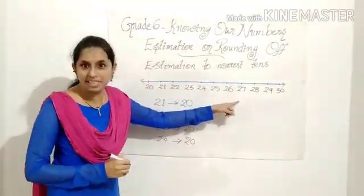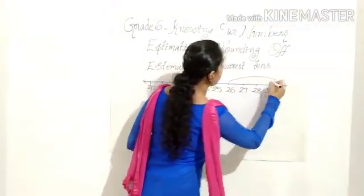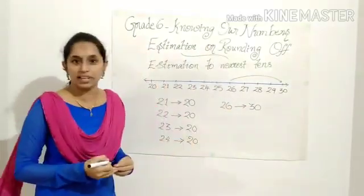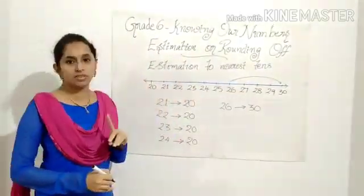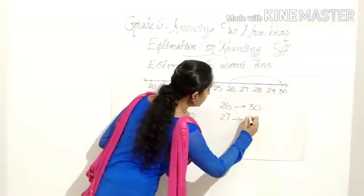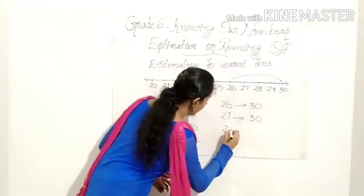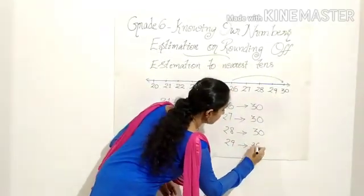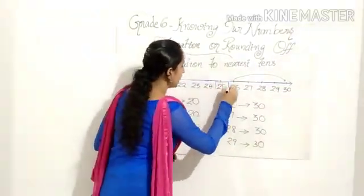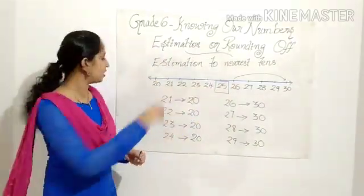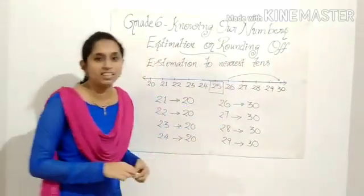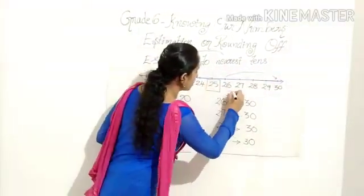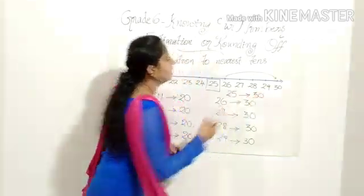What about 26 — is it near to 20 or 30? It is near to 30, so I can estimate 26 to 30. Same way, 27, 28, and 29 are all estimated to 30. But you see the number 25 in the middle — it has equal distance between 20 and 30. Remember, children: by default, we will estimate 25 to 30. Please remember that.